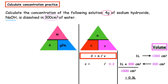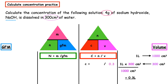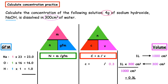We use the other triangle to calculate the number of moles: n = mass ÷ GFM. The mass given is 4 grams. Using the formula NaOH to calculate the gram formula mass: sodium — one times 23 equals 23; oxygen — one times 16 equals 16; hydrogen — one times 1 equals 1. Adding those up gives a GFM of 40 grams. So number of moles equals 4 divided by 40, which gives 0.1 moles.